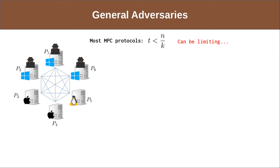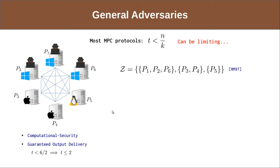Let us assume that the parties want to have computational security, meaning the adversary's computation time is bounded above by a polynomial, and they would like guaranteed output delivery. In such a case, they cannot use a threshold protocol, as any threshold protocol in such a setting can tolerate only up to two corruptions. To get around this, the adversary's corruption capability can be specified by an adversary structure, which is a set of potentially corruptible sets of parties. The adversary structure is monotone — any subset of a potentially corruptible set is also a potentially corruptible set. However, we only consider maximal sets to avoid redundancy.